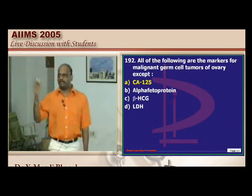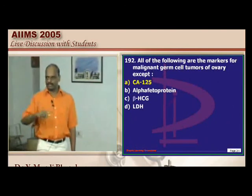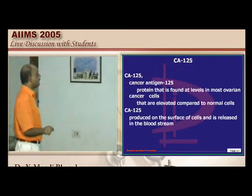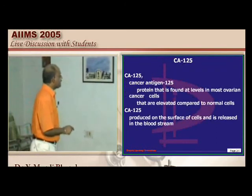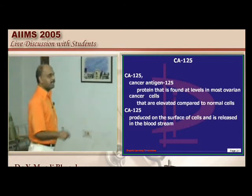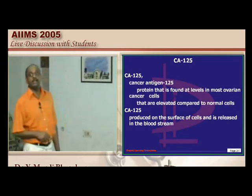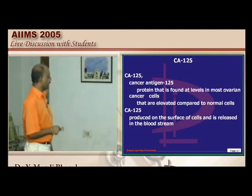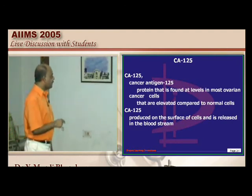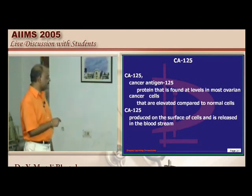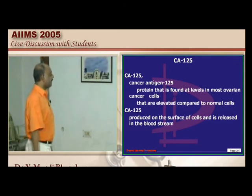Germ cell tumors of the ovary: ovarian tumors are broadly classified as surface epithelial tumors and germ cell tumors. CA-125 is produced by surface epithelial cells — it is not a marker for germ cell tumors. Most ovarian tumors arising from the surface produce CA-125.